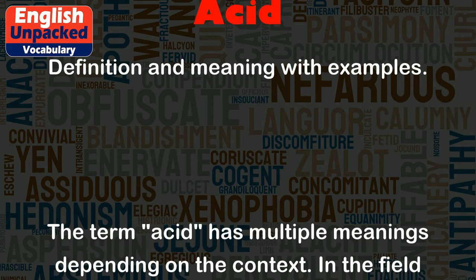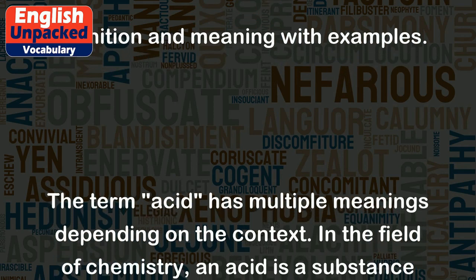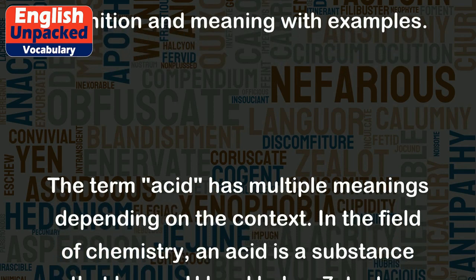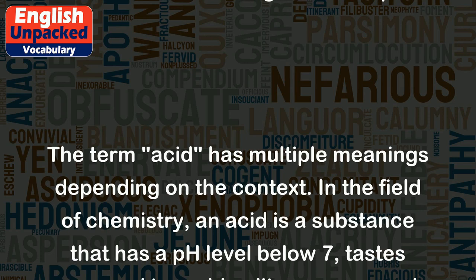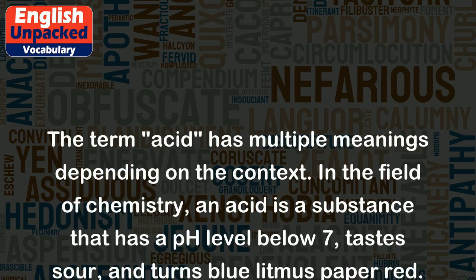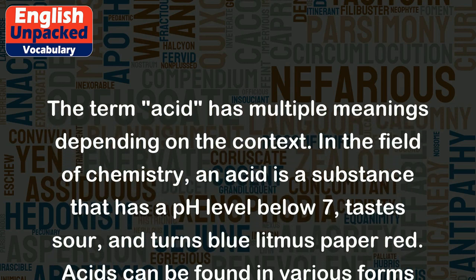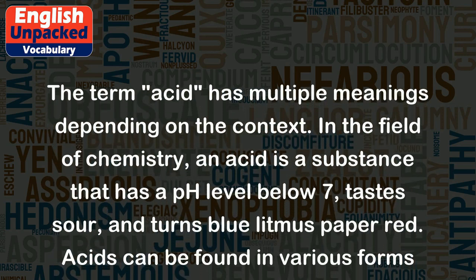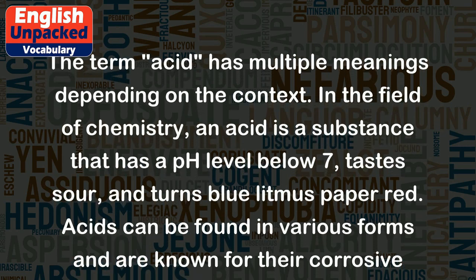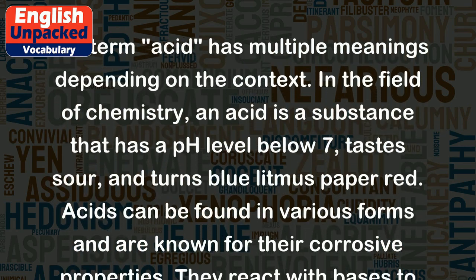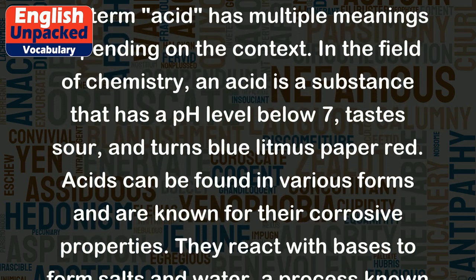The term 'acid' has multiple meanings depending on the context. In the field of chemistry, an acid is a substance that has a pH level below 7, tastes sour, and turns blue litmus paper red.